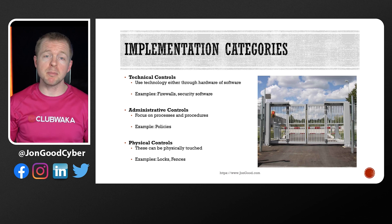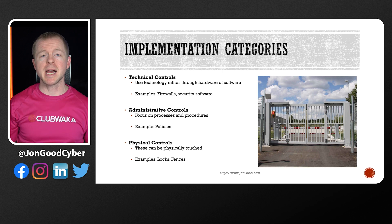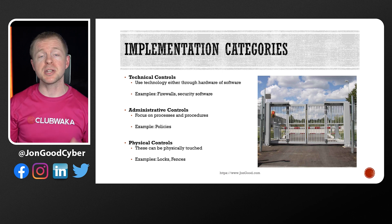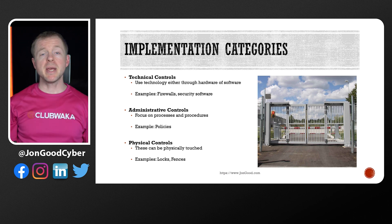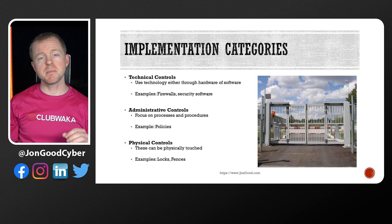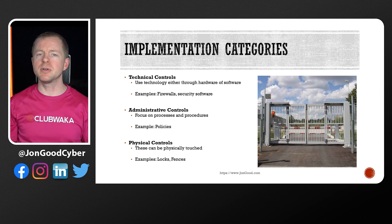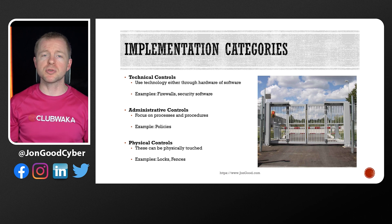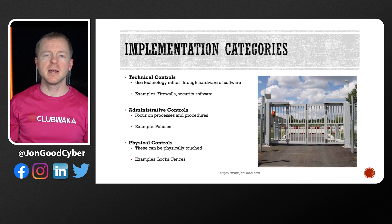Three major categories of how controls are implemented are technical controls, which use some type of technology to actually improve our security — so firewalls, security software, and authentication are all different examples. We have administrative controls, which focus on processes and procedures for some aspect of security — so incident response plans, business continuity plans, and security awareness. And then we have physical controls, which refer to some physical component, and some of the most frequently discussed are locks and fences.